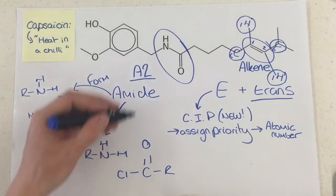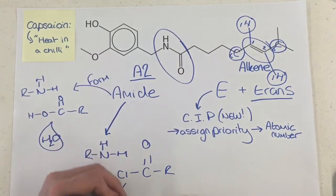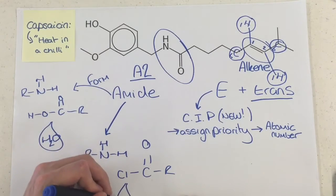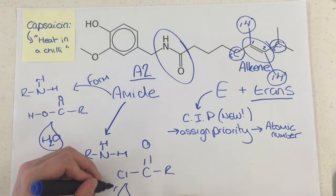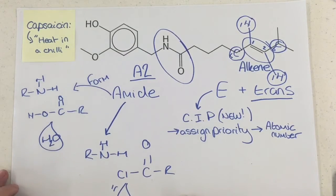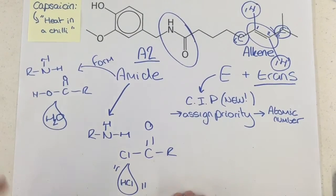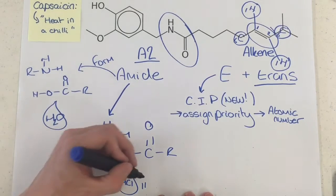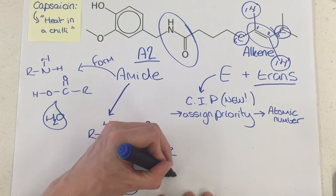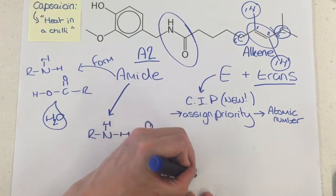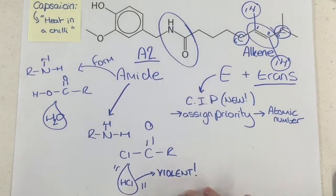These two react together, and what you would make from that is a molecule of HCl. I should draw this HCl as a gas, because this HCl is released in a very violent reaction — really violent. You get white misty fumes of HCl from that one.